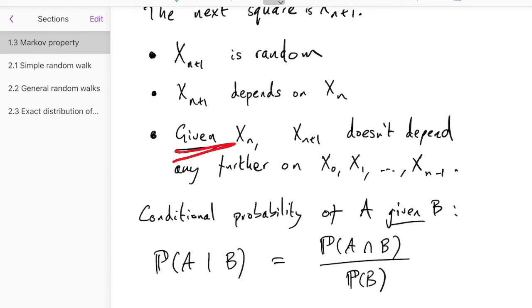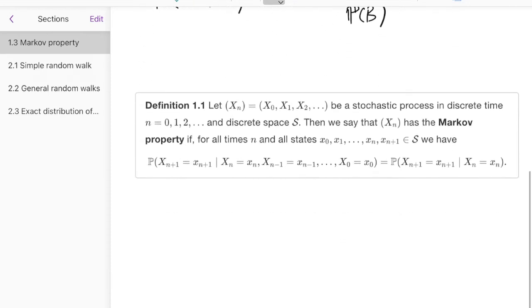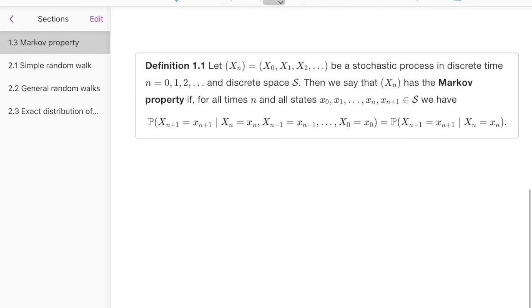Okay, so now that we have the notation for the probability of something given something else, we can write down the Markov property, which is this. Now, let's have a look at what we have in this equation here. First we have this term, x_{n+1}. So that's about what happens on the next step, right? That's about the future. We also have this term about x_n. So x_n is the square that we're on now. And then we also have these terms here, from x_{n-1} down to x_0. So those are all the things that happened in the past.